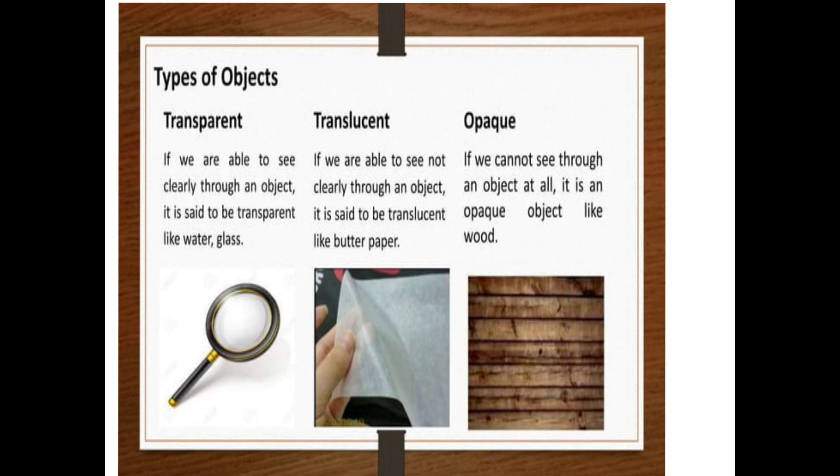Translucent. If we are able to see not clearly through an object, it is said to be translucent, like wax paper. It means we can see through it, but not a clear image is formed. Not clearly we can see through it, so that object is translucent.